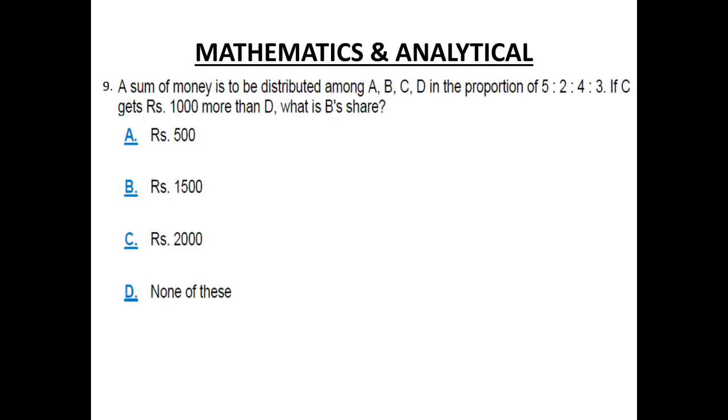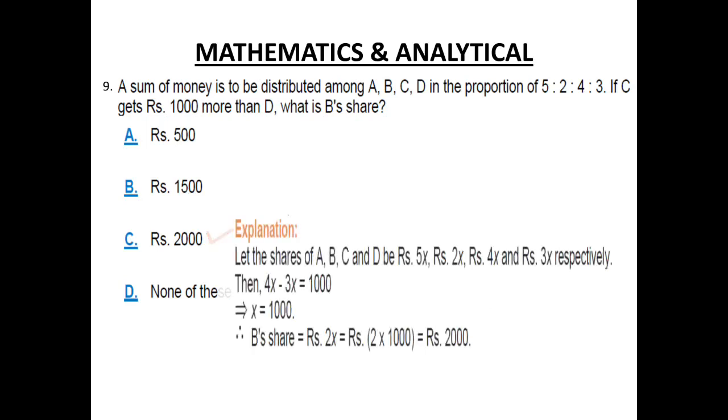Number 9. A sum of money is to be distributed among A, B, C, D in the proportion of 5 is to 2 is to 4 is to 3. If C gets Rs. 1000 more than D, what is B's share? The correct answer here is C, Rs. 2000. It's a ratio proportion type of question. Let the shares of A, B, C and D be Rs. 5x, 2x, 4x and 3x respectively.